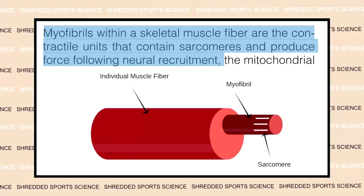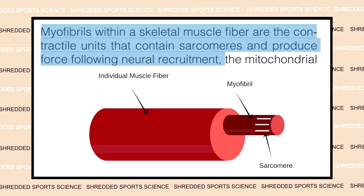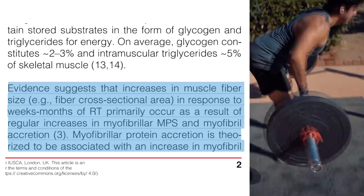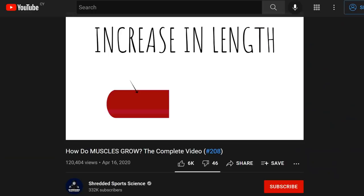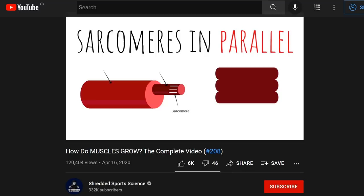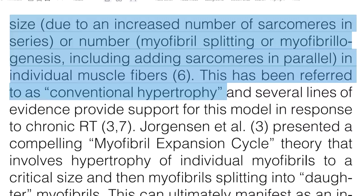How does muscle grow? Myofibrils within a skeletal muscle fiber are the contractile unit that contains sarcomeres and produce force following neural recruitment. Evidence suggests that increases in muscle fiber size in response to weeks or months of resistance training primarily occur as a result of regular increases in myofibrillar muscle protein synthesis and myofibrillar accretion. Muscle fibers can increase in length — the increase of sarcomeres in series — but this is more associated with specific situations such as hyperextension of a muscle in a cast. Importantly, it is the increase of sarcomeres in parallel, known as conventional hypertrophy, that is how your muscle fibers grow in response to resistance training.